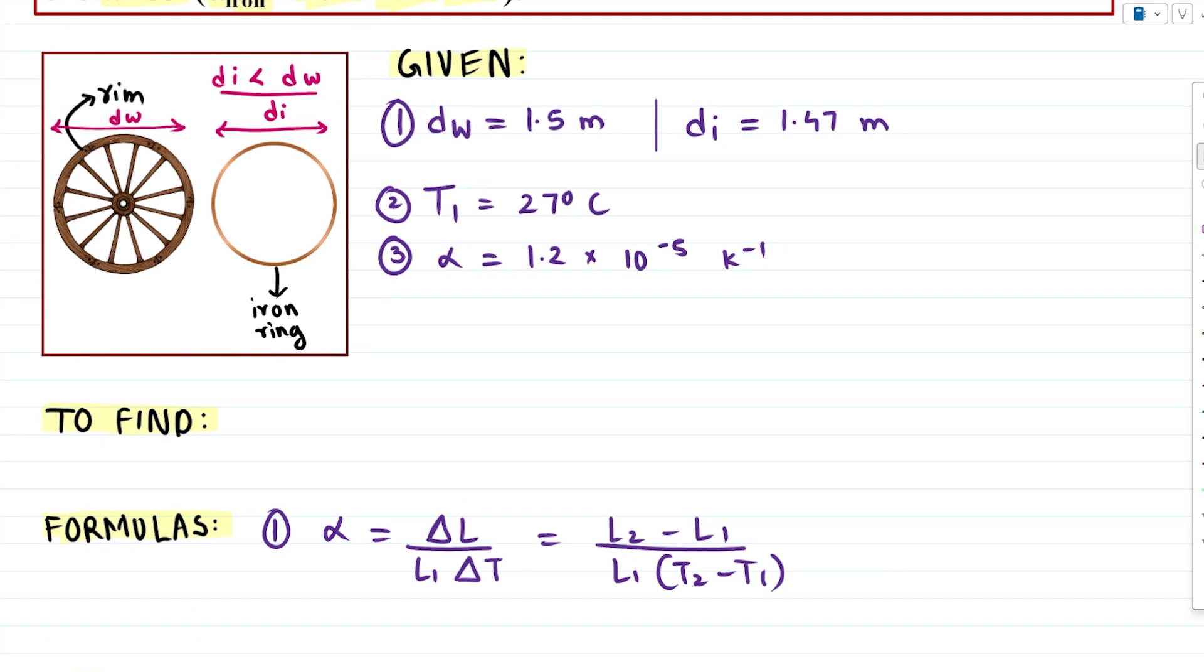Now we have to think about what to write for L2 and L1 so that our formula will give us the correct answer. We have to keep in mind that we are heating the ring and not the wheel. So L1 that is the initial length will be the diameter of our iron ring dI, so 1.47 meters.